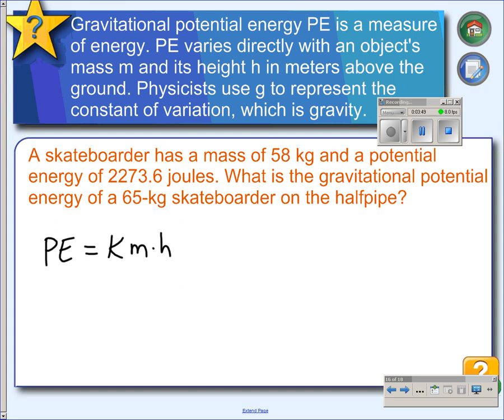Physicists use G to represent the constant of variation, which is gravity. So instead of using K here, we can put in a G. That's our formula, which you should recognize from your science classes. PE equals GMH or MGH, or any order you want to put it, it's the same thing.